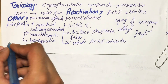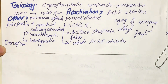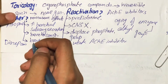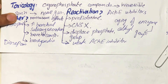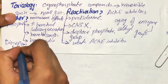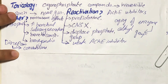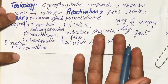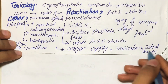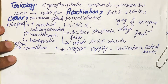Another agent used is diazepam. As a sedative or hypnotic, diazepam is administered to reduce persistent convulsions caused by these agents. Other general supportive therapies include maintenance of a patent airway, oxygen supply, and artificial respiration.